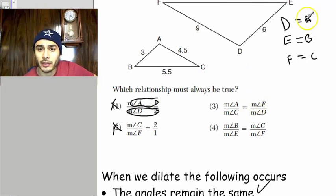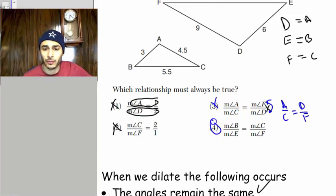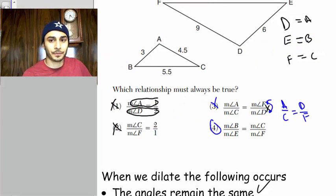So option 3 says A over C is equal to F over D. That's not true because it's supposed to say A over C is equal to D over F, so this order here is messed up. So it's not 3. So by default, the answer is 4. But let's look at it anyways. We got B over E is equal to C over F. See how that ordering is preserved there?